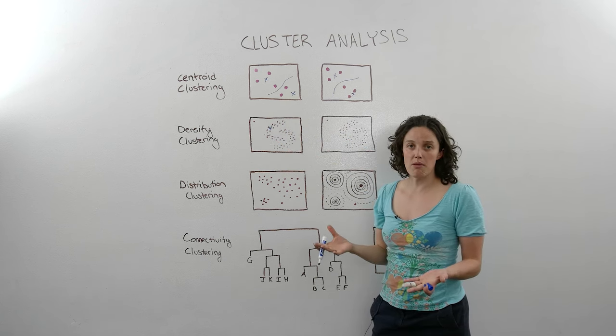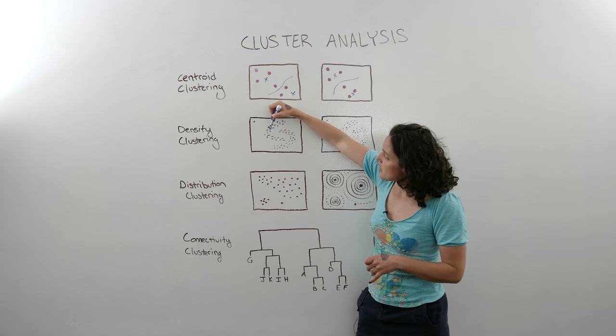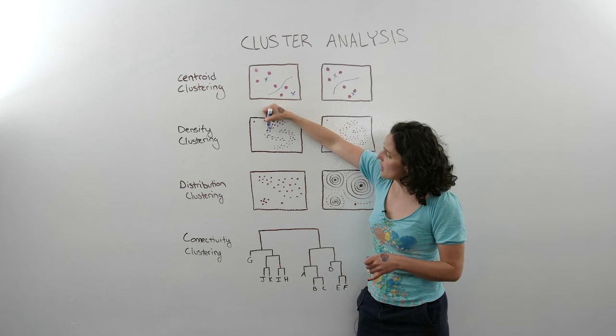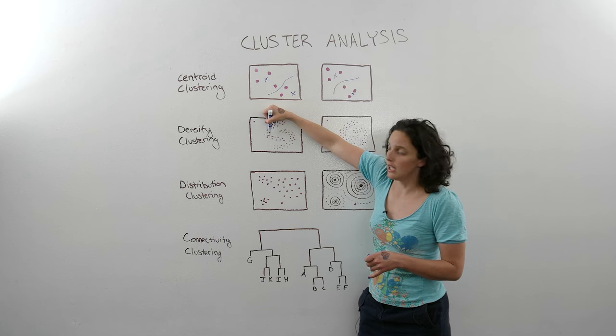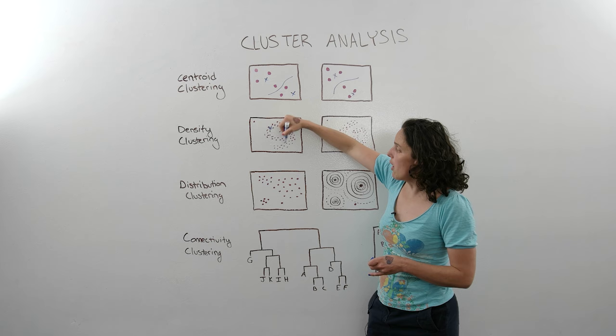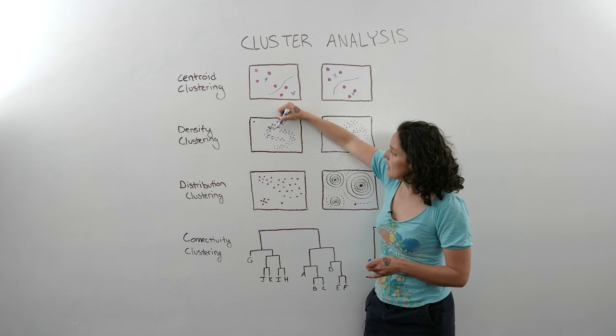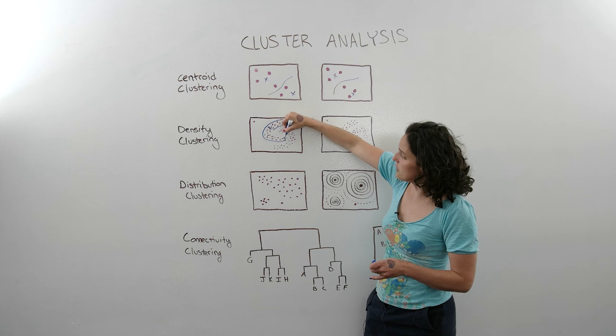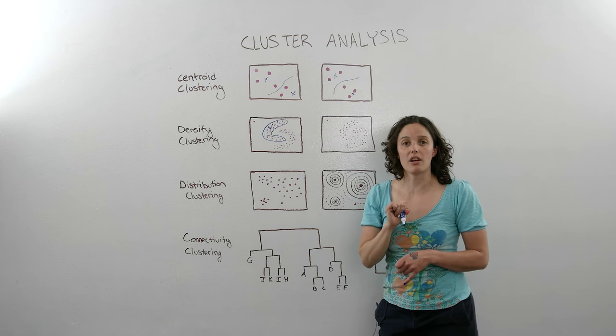So now they want to know who else might be related to this group. So this point's part of it, so now it goes to the next point over and it says, are you close enough to me to be related? And if the answer is yes, then they're considered to be part of that group. And so on and so forth until it's hit every point that meets that criteria of being close enough.